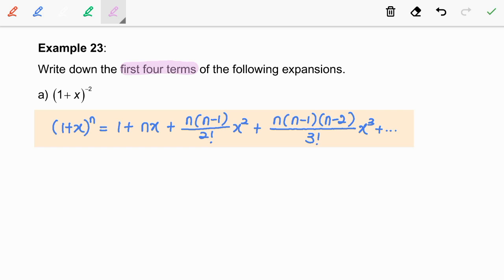Question A: 1 plus x to the power of negative 2. Here, the power number given is a negative integer, negative 2. So we are going to use this binomial formula to expand 1 plus x to the power of negative 2.